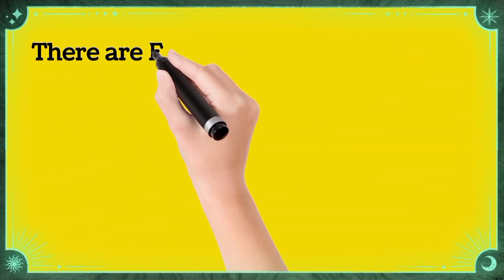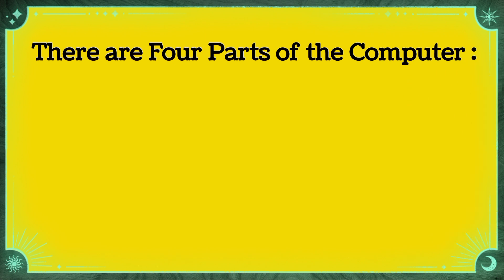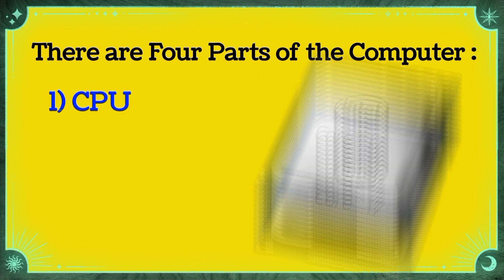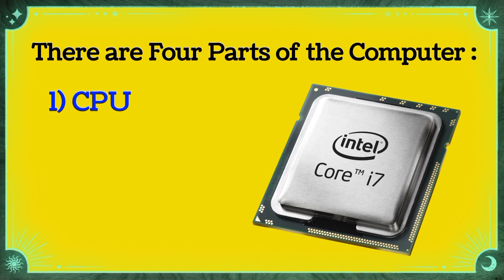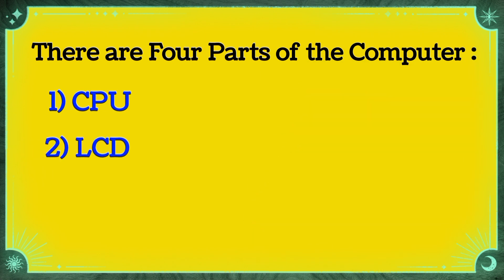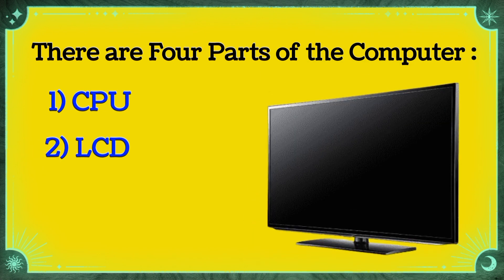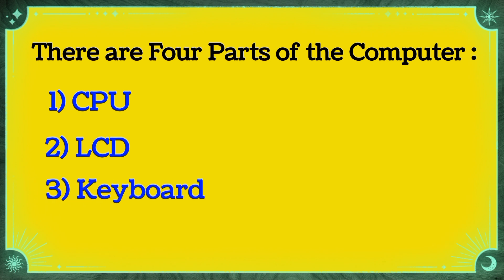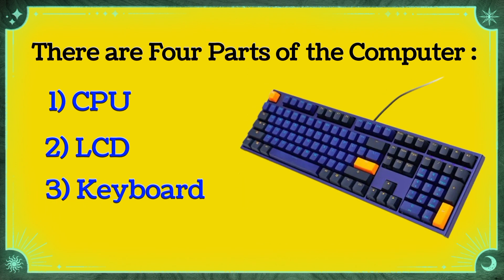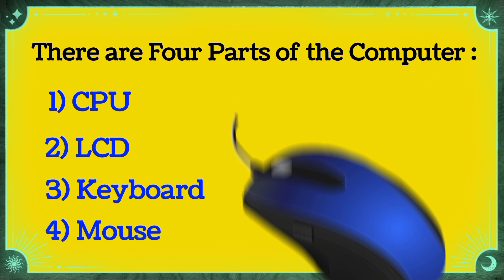There are 4 parts of the computer: Number 1 — CPU, Number 2 — LCD, Number 3 — Keyboard, Number 4 — Mouse.